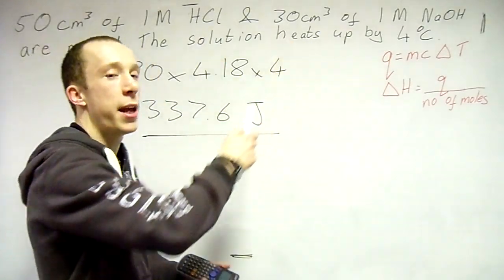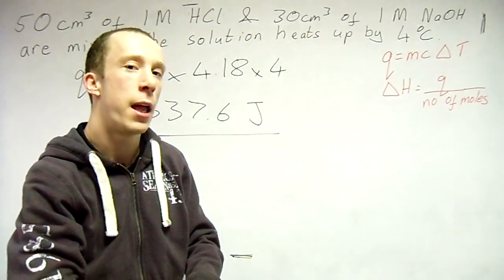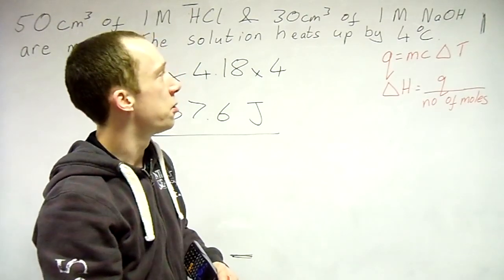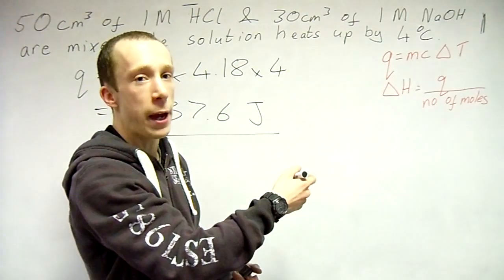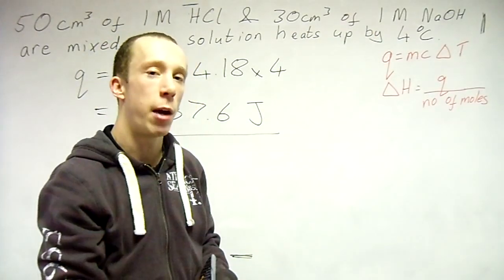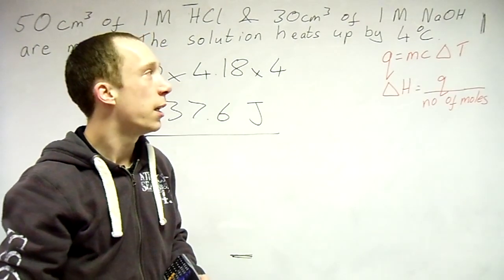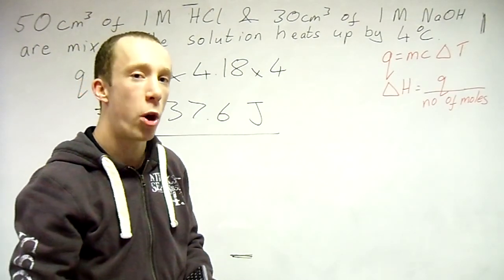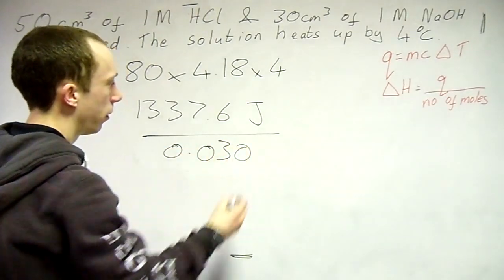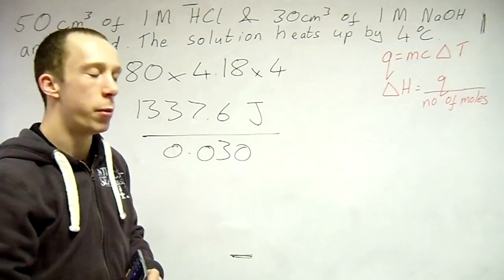Now because I know HCl and NaOH is a one-to-one, then I can spot pretty easily that the sodium hydroxide is the lowest. So 30 divided by 1000 to convert our volume into dm cubed, times by our concentration. You should be familiar with these equations from your Chem 1 exam.